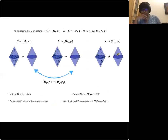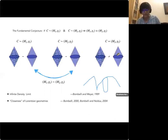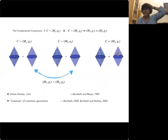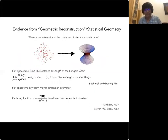An important aspect of the theory is the fundamental conjecture: if the same causal set is approximated by two different spacetimes, then those two spacetimes are almost the same — they differ only on scales smaller than the discreteness scale.